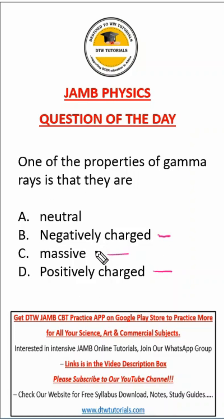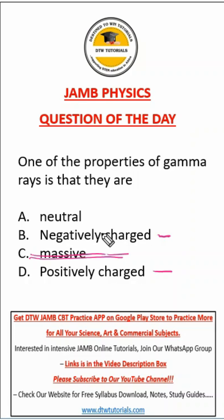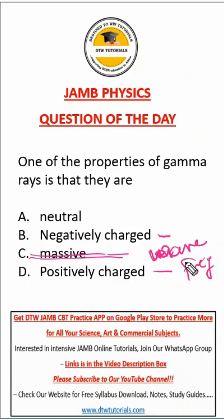If you look at these options you can quickly eliminate the odd one out, and the odd one out is 'massive.' When you're talking about gamma rays, it is not about mass — it is about wavelength and frequency. When you're talking about rays, that's waves.